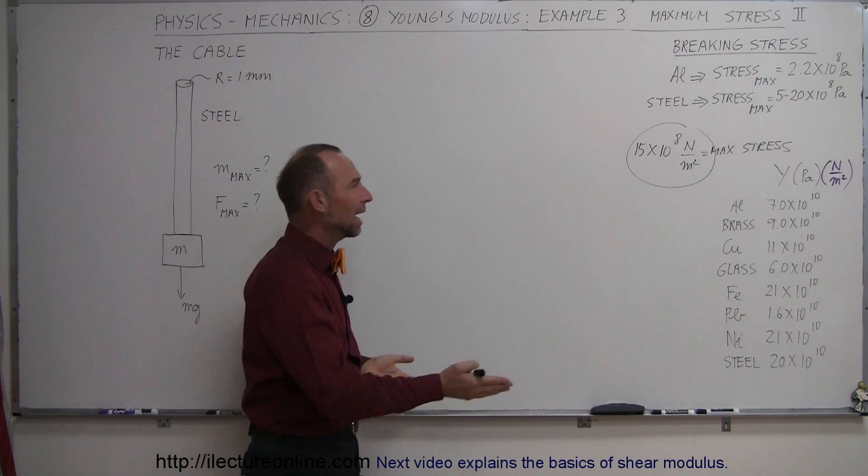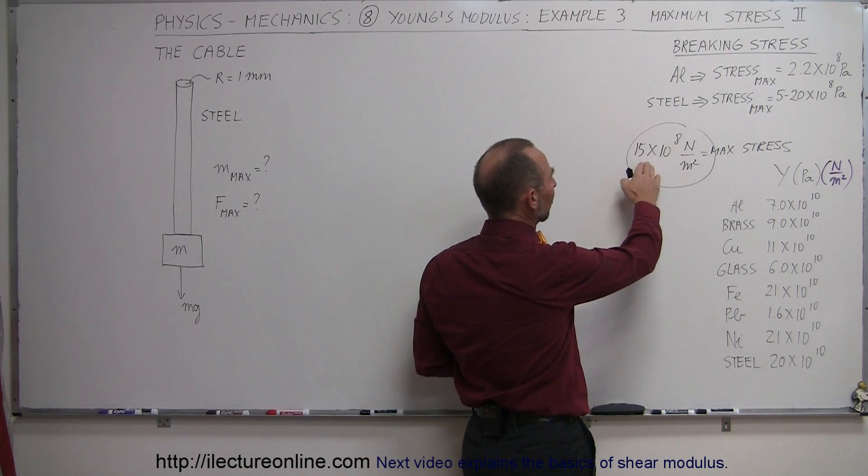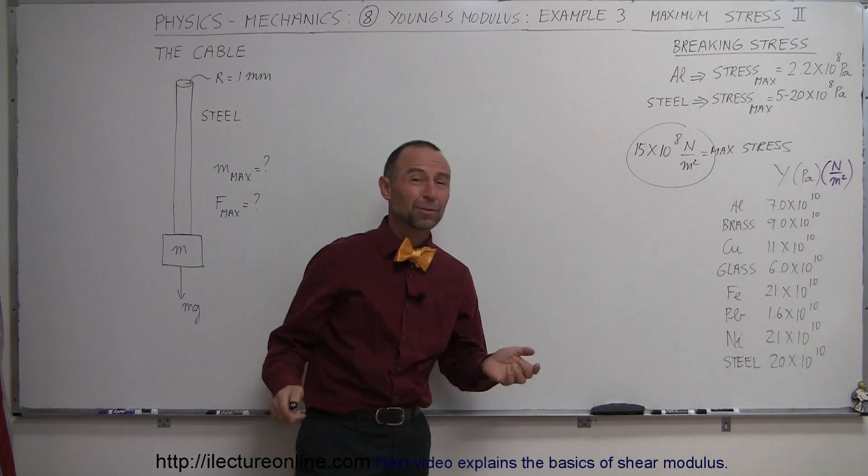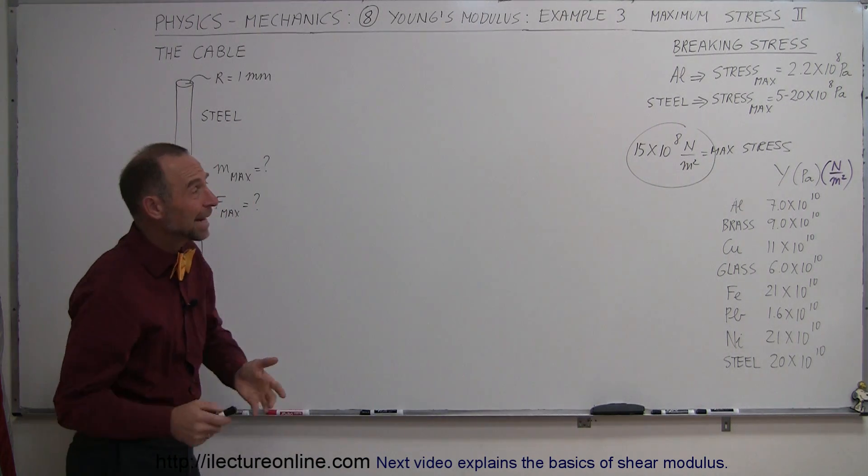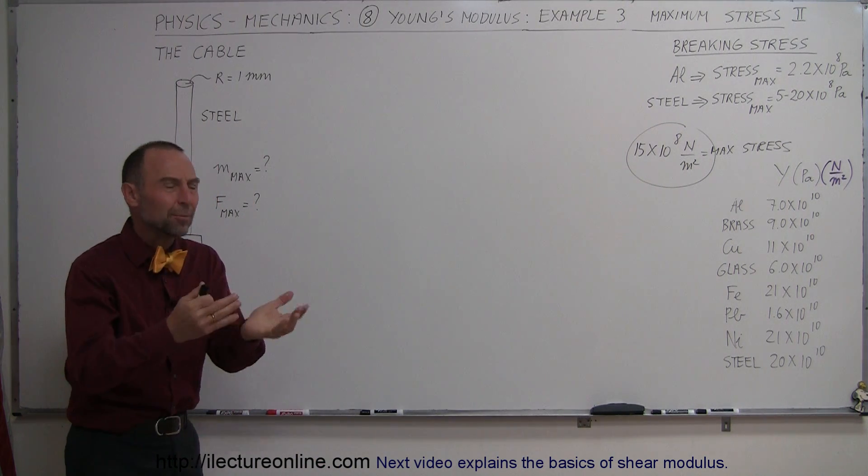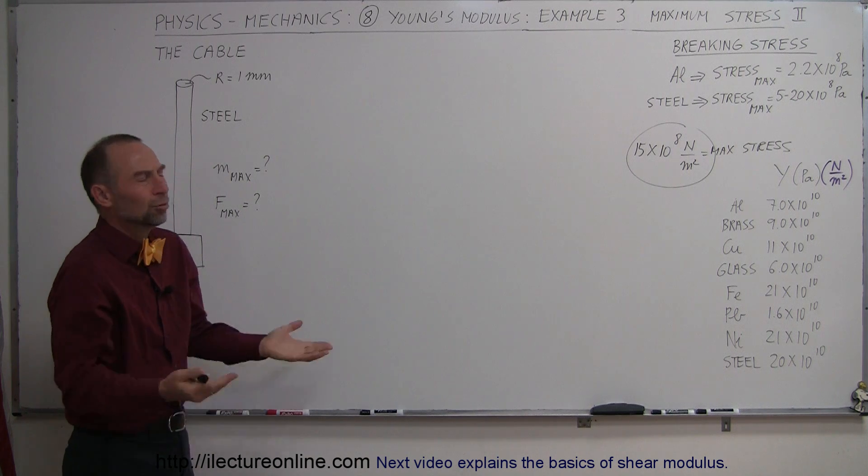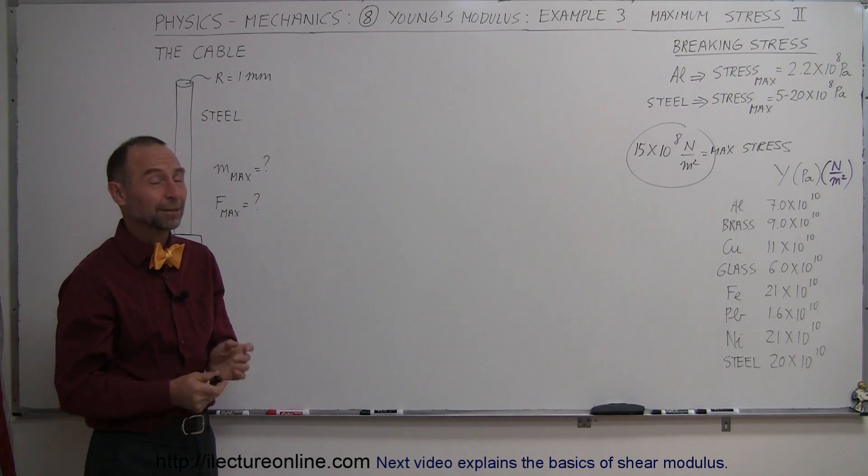And so let's say we have some steel that has maximum stress of 15 times 10 to the 8 newtons per square meter. Well, that may still not mean anything to us. What does that really mean, the breaking stress? What does that mean, 2.2 times 10 to the 8 or 15 times 10 to the 8 newtons per square meter?